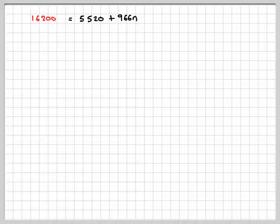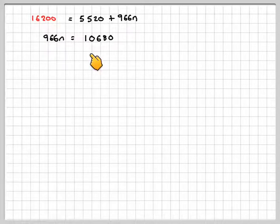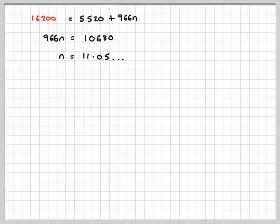Right, so resolving that, we're going to have 966N is equal to 10,680. And then to find N we'll need to divide by 966, we get that N is equal to 11.05.